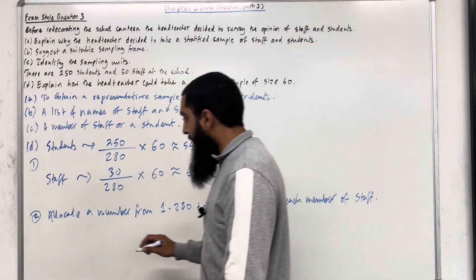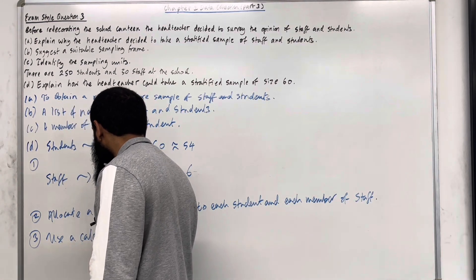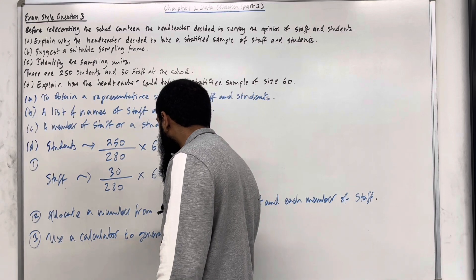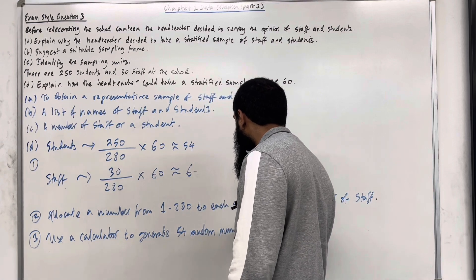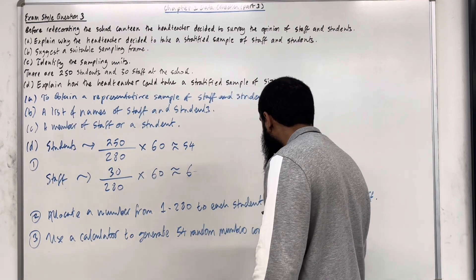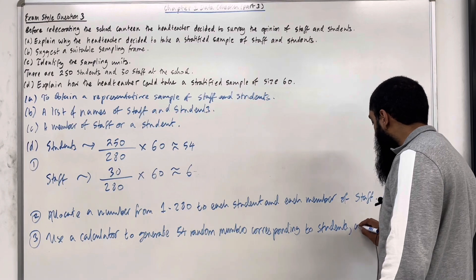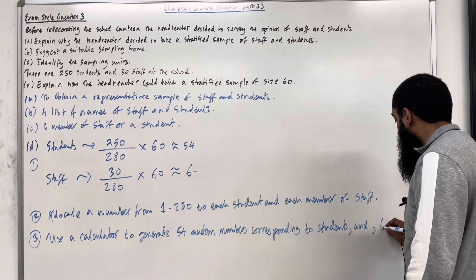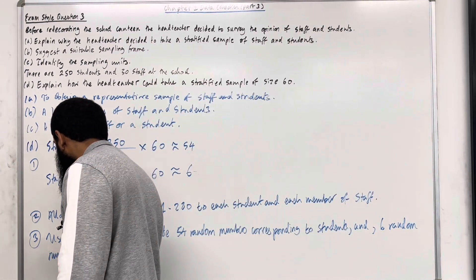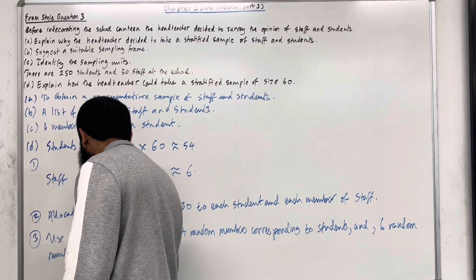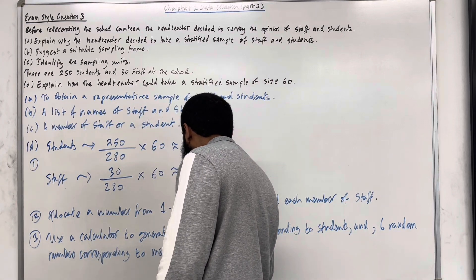Step number 3: Use a calculator to generate 54 random numbers corresponding to students and 6 random numbers to members of staff.